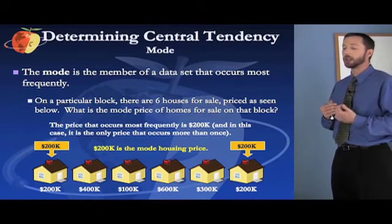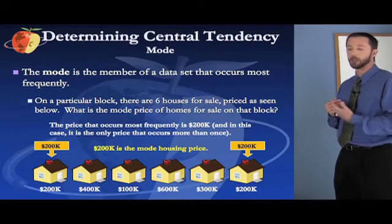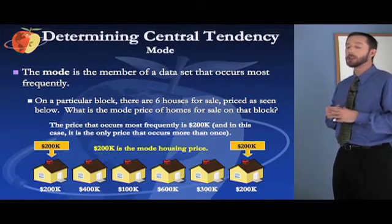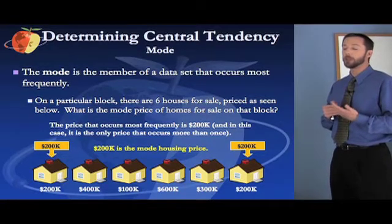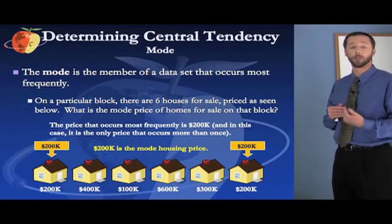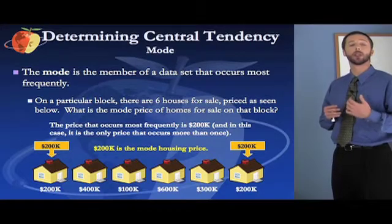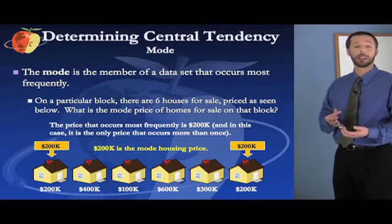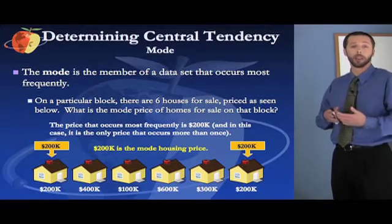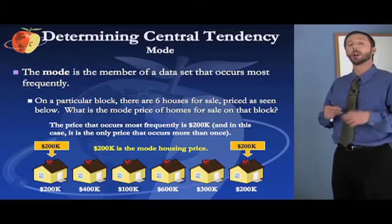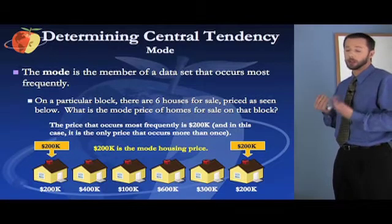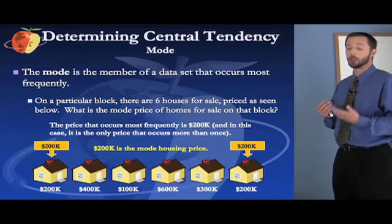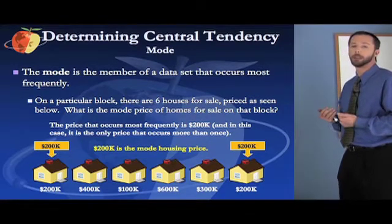So on a particular block there are six houses for sale, prices seen below. What is the mode price of homes for sale on that block? The price that occurs most frequently is $200,000, and in fact it's the only one that occurs more than once. If you had one housing price that occurred twice and another that occurred three times, whichever one occurs the most — the one that occurred three times in that example — would be your mode housing price. In this case, $200,000 is the mode housing price.